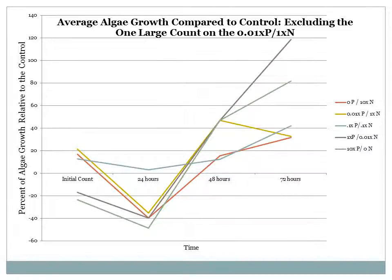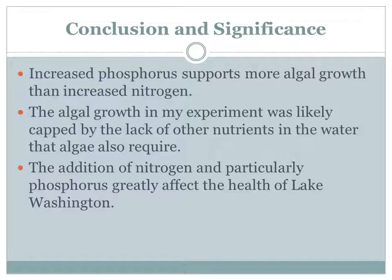In this graph, the final algae counts follow a clear division, where increased phosphorus levels correlate to increased algal growth, with the exception of the 10x phosphorus and 0x nitrogen sample, which falls just below the sample with 1x phosphorus and 0.01x nitrogen. I was correct in hypothesizing that some amounts of both nutrients are required for maximum algal growth. However, contrary to my hypothesis, the water sample with the same low amount of phosphorus and nitrogen did not have the most growth. Instead, I found that increased phosphorus supports more algal growth than increased nitrogen.